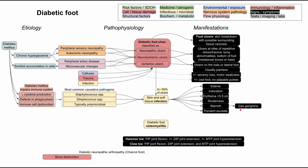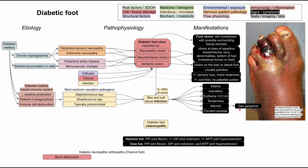In very severe cases, you can have an infection that produces gas, causing gas gangrene. There's an unpleasant picture of a diabetic foot ulcer that demonstrates many of these features: edema, induration around the edges, a large area of erythema, tenderness though the patient might be numb, warmth, purulent exudate around the edges, and gas gangrene. It's a good picture for all the features of an infected diabetic foot ulcer.